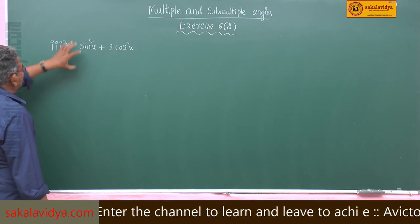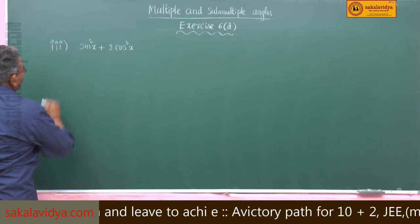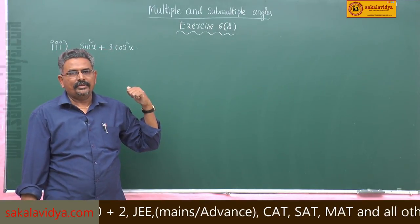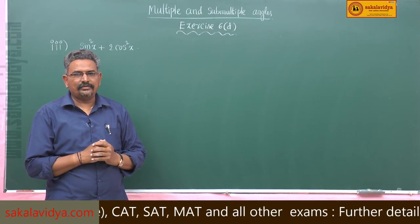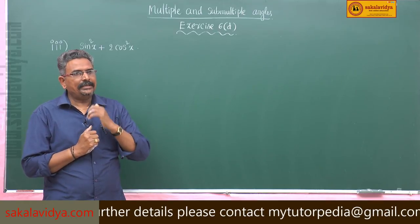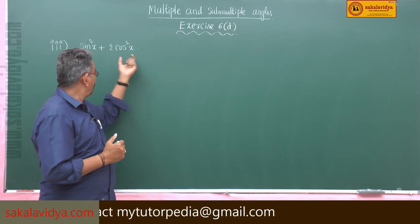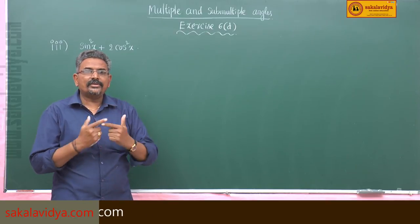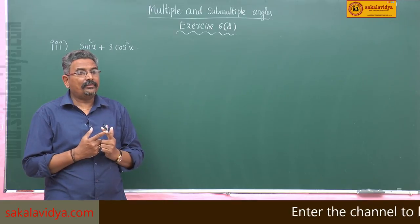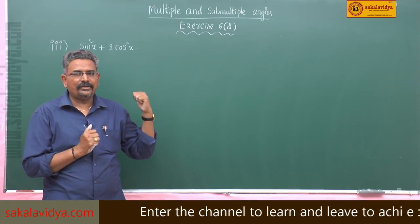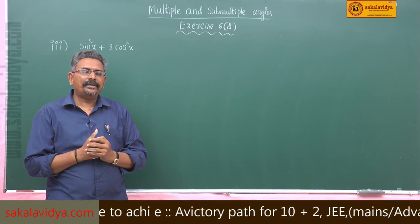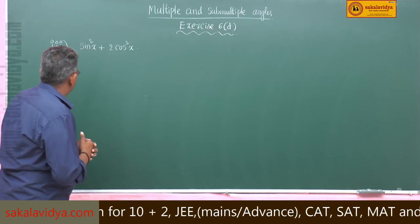Third problem: sin square x plus 2 cos square x. In this case also we have to find the period of this function. In order to find the period, we could change sin square x and cos square x as functions of cos 2x, or we can use the basic definition of the periodic function directly. Let us do it using the definition.